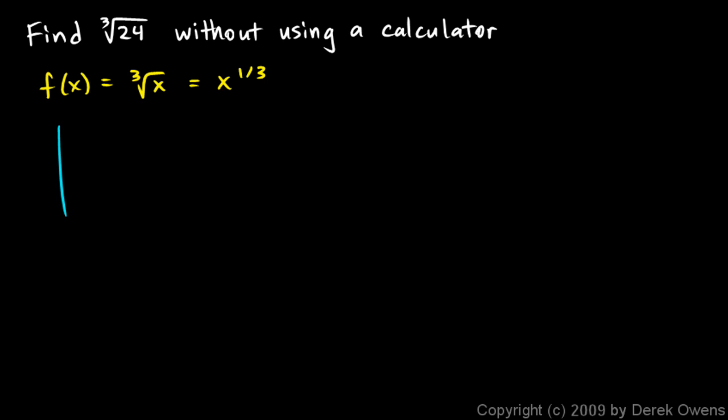And if you get a visual picture here, the cubed root function looks something like this. It actually goes like that, but we're only concerned with the first quadrant here. And we want to find the cubed root of 24.